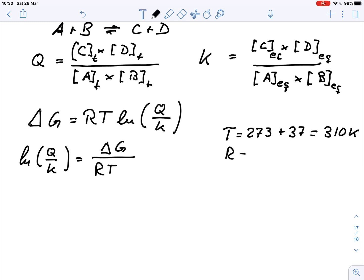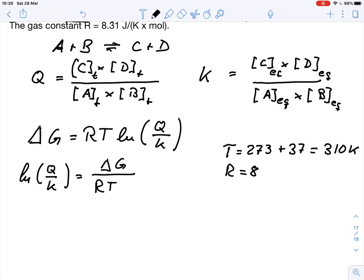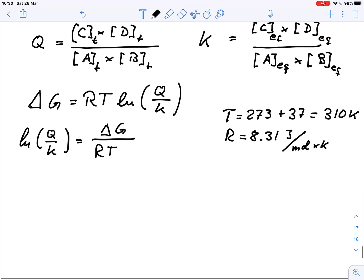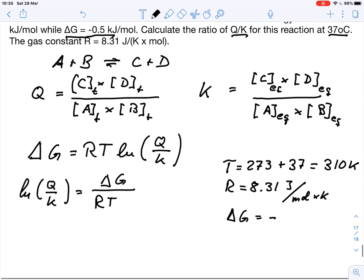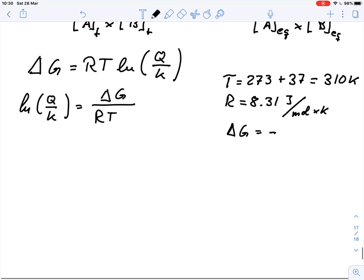R was given as 8.31 Joule per mole and Kelvin. And our delta G, that was given as 0.5 kJ per mole.